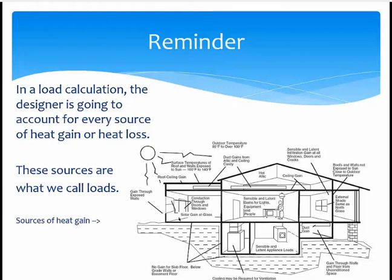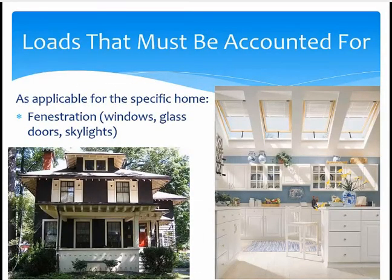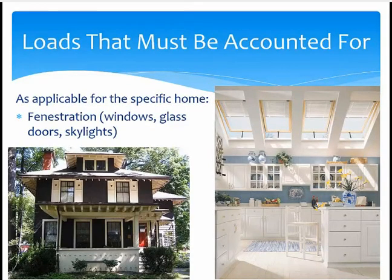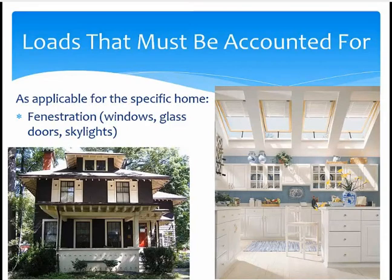Now let's look more in depth at the various loads included in a normal load calculation. The first are the loads that will likely have the biggest impact on the final load calculation, and those are the loads due to fenestration — loads that come from windows, glass doors, and skylights. It makes sense: if you sit next to a window in the middle of winter, you'll feel colder than anywhere else in the room because heat moves through glass so easily. A window will lose more heat than a wall, wooden door, or ceiling.